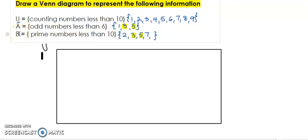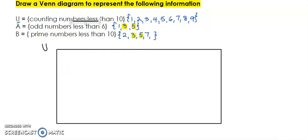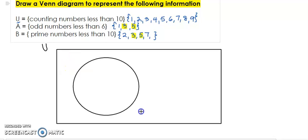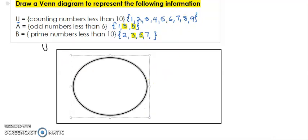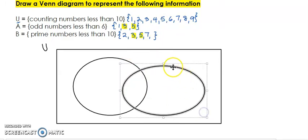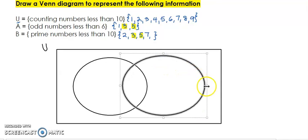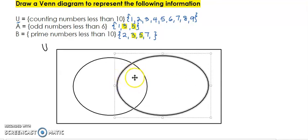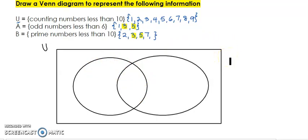We notice we have two sets and therefore we need two ovals. We also know that there are members that are in Set A that are also in Set B, so we know that we have to make those two ovals overlap. We are going to draw those two ovals within the universal set and make them overlap — one crosses over the other so that there is a space in the middle. Now we label this one on the left A, and this one on the right B.